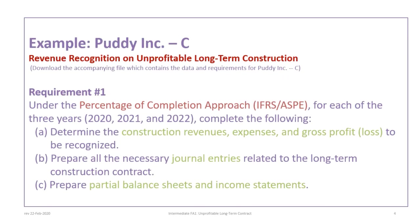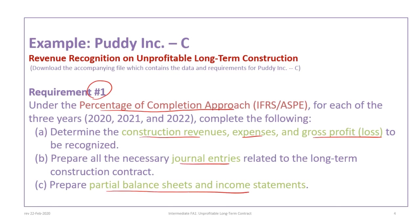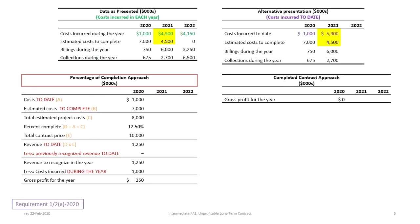This tutorial is based on the Putty Inc. C example. Please be sure to download the correct file so you can follow along. The data has been changed in the years 2021 and 2022. Requirement 1 will be to work under the percentage of completion approach to determine the construction revenues, expenses, and gross profit to be recognized, the journal entries required, and partial balance sheets and income statements. Requirement 2 will have the same objectives but under the completed contract approach, combining calculations for both approaches together.